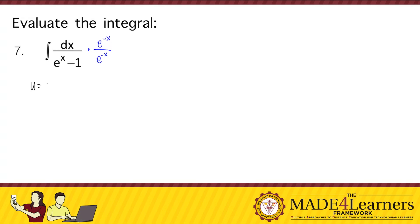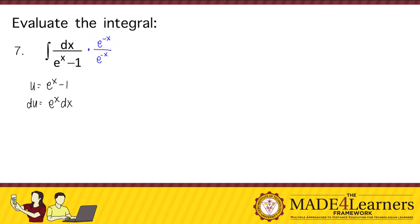Recall: if u is equal to e to the power of x minus 1, then du should be equal to e to the power of x dx. So if there was e to the power of x in the numerator, then this given would have been integrable. We have to put e to the power of x in the numerator, so that this will now be equal to e to the power of negative x dx over e to the power of negative x over e to the power of x minus 1.